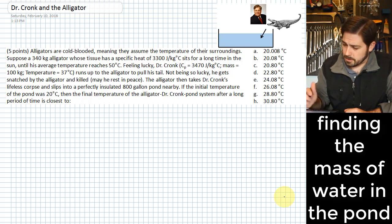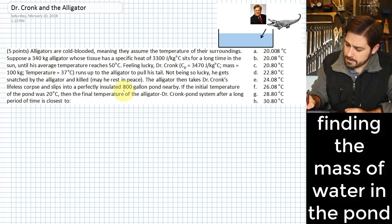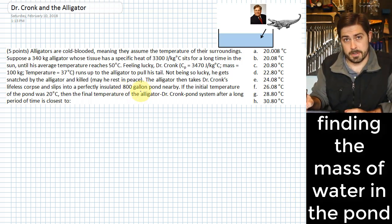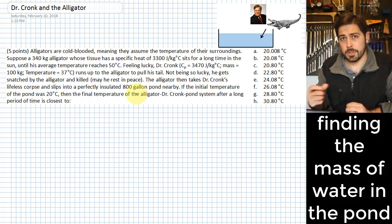So the first thing we notice here is that this pond is an 800-gallon pond. We have enough information about water and unit conversions to be able to convert 800 gallons into a number of kilograms. And here's how we do it.